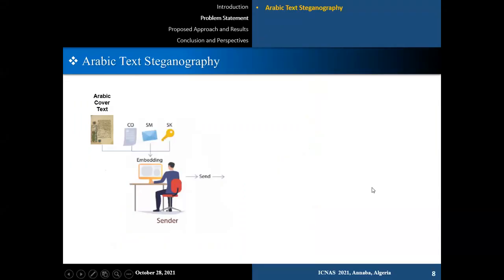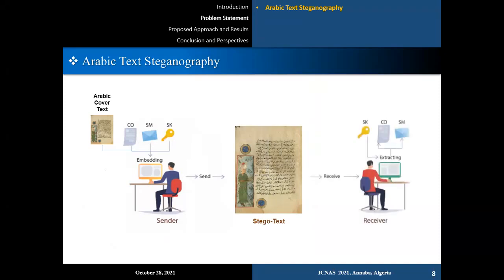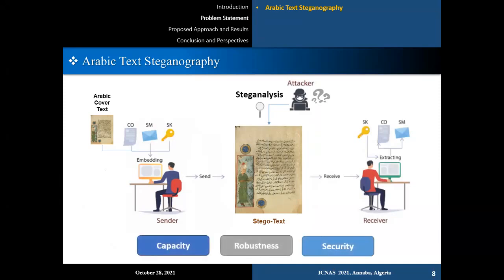In this work, we focus on creating a new steganography algorithm based on Arabic cover text, where the main goal is to prevent a third party from being able to discover the hidden information inside the transmitted data. The proposed technique should take into consideration three aspects: capacity, which represents the amount of data that can be hidden without changing the cover text; robustness, which represents the resistance to possible modification or distortion in unseen data; and security, where the hiding process should be performed in a way that does not arouse suspicion from attackers.